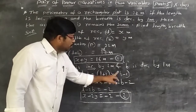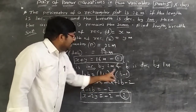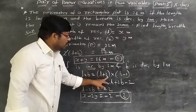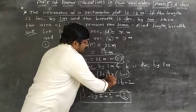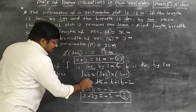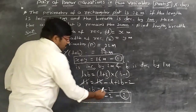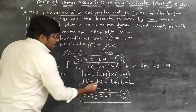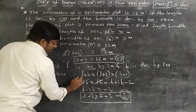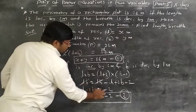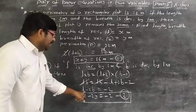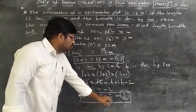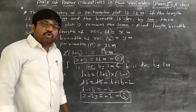Multiplying out: LB − L + 2B − 2 = LB. The LB terms cancel on both sides. So −L + 2B − 2 = 0, which rearranges to L − 2B = −2. Substituting L = x and B = y gives x − 2y = −2. We now have two equations.